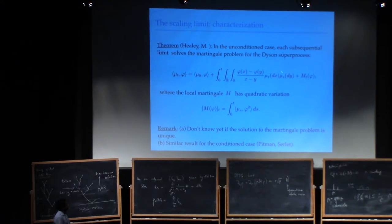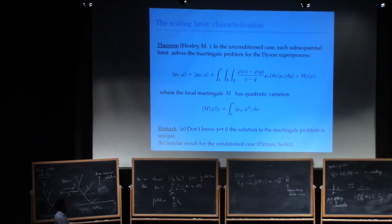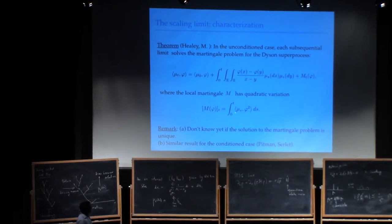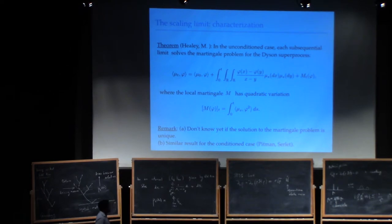The characterization of the limit: each sub-sequential limit solves a martingale problem. There's a term that's a weak form of the Coulomb repulsion, or a weak form of what you expect in the free probability limit, plus a fluctuation term whose quadratic variation is standard — essentially the same as in the Dawson-Watanabe case. The problem is that we don't yet know if the solution to this martingale problem is unique. There's a stochastic calculus framework for it, but somehow Dyson's repulsion is just right.